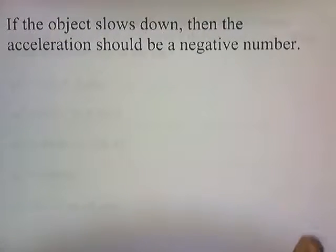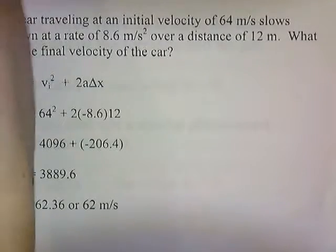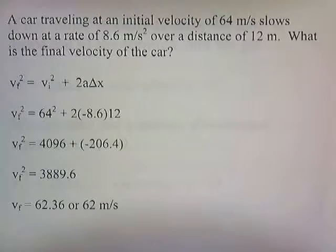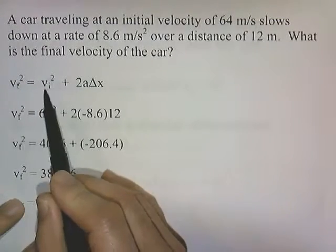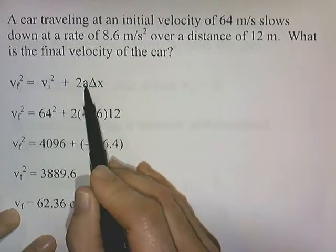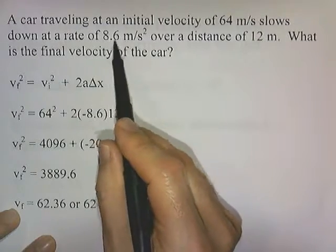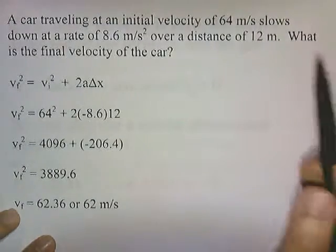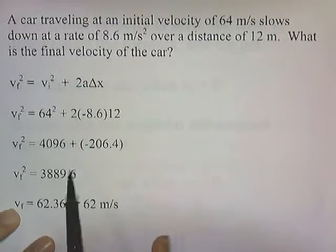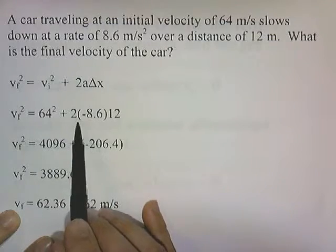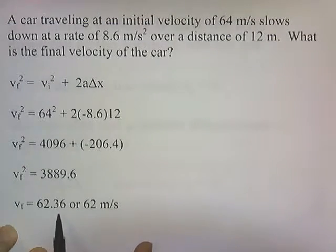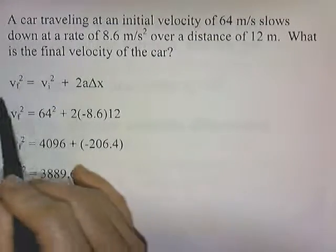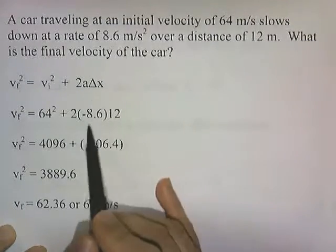If the object slows down, then the acceleration should be a negative number. A car traveling at an initial velocity of 64 meters per second slows down at a rate of 8.6 meters per second squared over a distance of 12 meters. What is the final velocity? Vi is 64, a is negative 8.6, and delta x is 12. 64 squared is 4,096; 2 times negative 8.6 times 12 is negative 206.4. Adding gives 3,889.6, and taking the square root gives 62.36, or 62 meters per second. When using this formula, if the object slows down, you must use a negative value for acceleration.